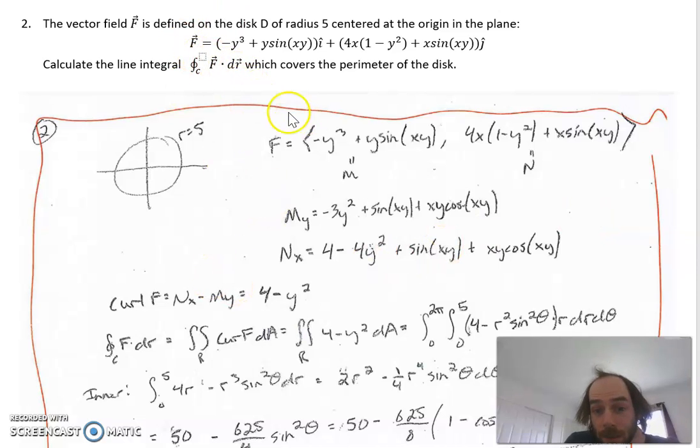So what I do is integral of F dot dr, that's M dx plus N dy. In this case, you should recognize quickly that this is one where I can do Green's theorem. Green's theorem takes the line integral, which you can imagine...